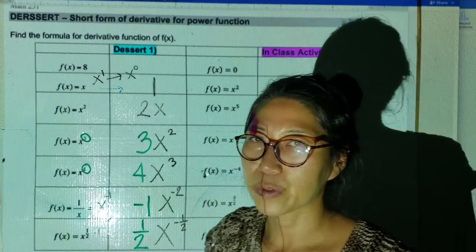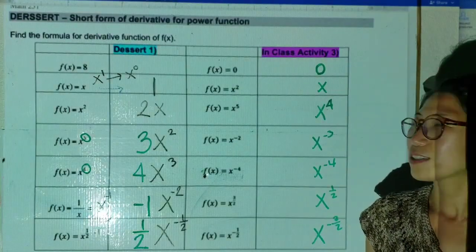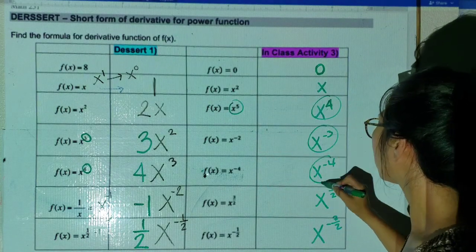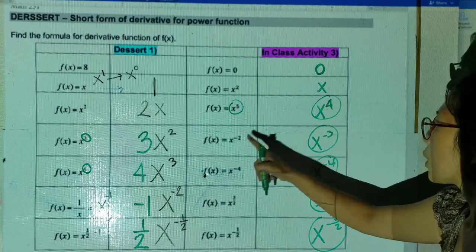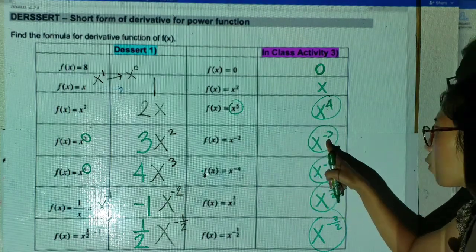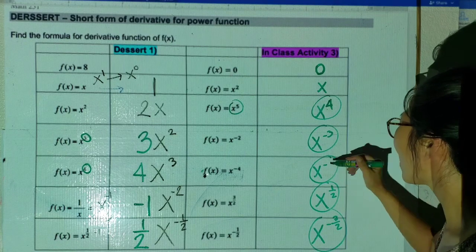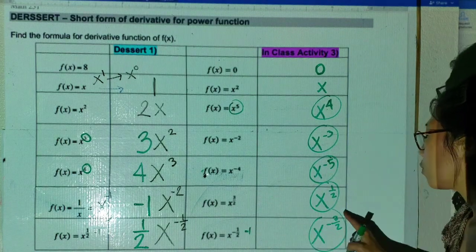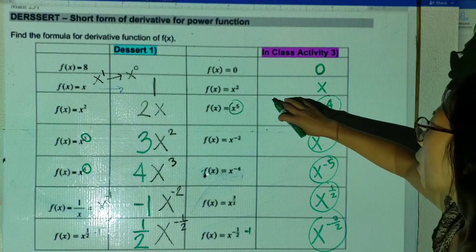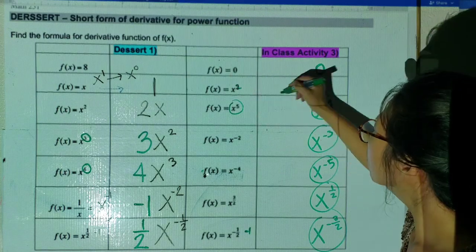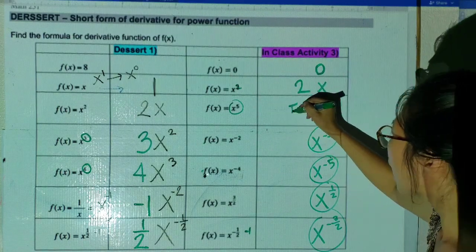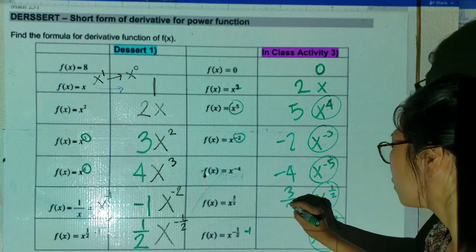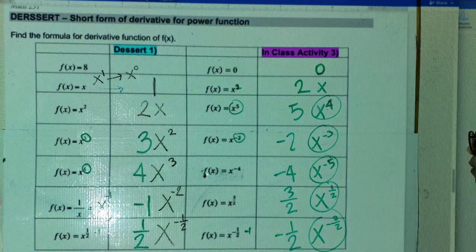The pattern: bring the power to the front, then lower the exponent by 1. So if you have x to the 6th, you get 6x to the 5th. If you have x to the negative 4/3, subtracting 1 makes it x to the negative 7/3, with coefficient negative 4/3 in front. This is the Power Function Derivative Rule. Now we are repeating some questions from the previous section — but using the best way: the Power Rule instead of the limit definition.